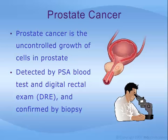Prostate cancer is the uncontrolled growth of gland cells in the prostate, a small gland just below the bladder that surrounds the urethra or urine channel. This common cancer is detected most commonly by the prostate specific antigen or PSA blood test and digital rectal exam or DRE. The diagnosis is confirmed by a biopsy which allows doctors to look at the prostate cells under a microscope.